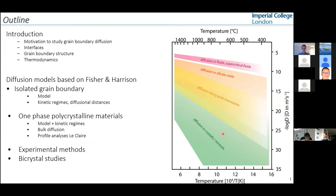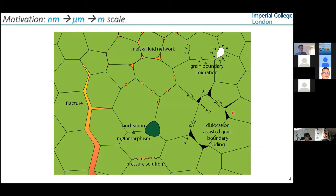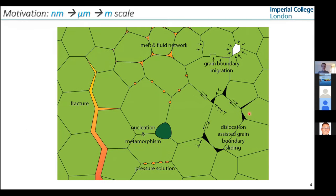Grain boundary diffusion is the dominating atomic transport mechanism in a solid material at lower temperatures. Here we have temperature plotted against diffusivity. The diffusion in crystals and single crystals is considerably lower, and if you're looking at diffusion in fluids or melts, it's higher. As temperature increases and you're reaching the melting point, these two will of course be very similar or the same. This illustration summarizes interfacial processes that happen at the nanometer to micrometer scale, but ultimately govern whole rock processes.